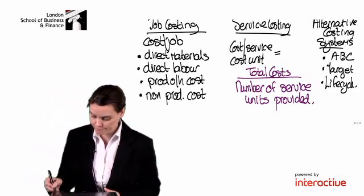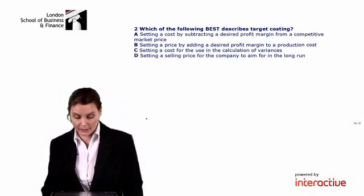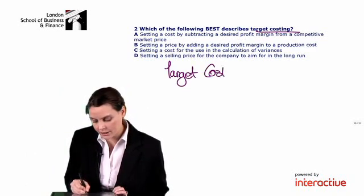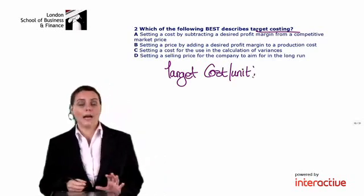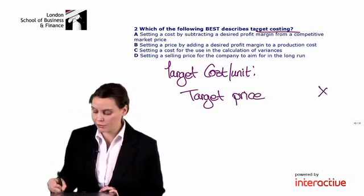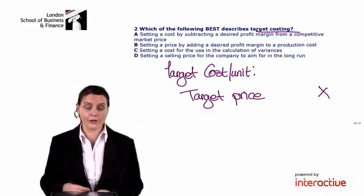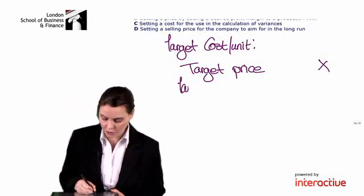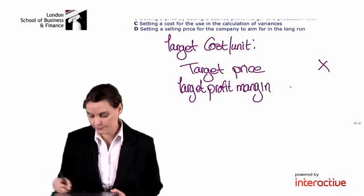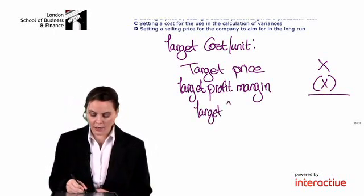Just having a quick look at a question: we're asked which of the following best describes target costing. Our approach is that we start with a target price — the price we believe customers will be prepared to pay for our product. Then we adjust for our target profit margin, subtracting that from our target price to calculate our target cost per unit.